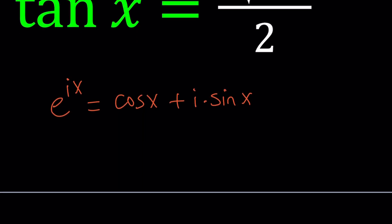Now, in this expression, if you replace x with negative x, you get e to the power negative ix, and since cosine is an even function, cosine of negative x is going to be the same as cosine of x, but sine is odd, so sine of negative x is going to be negative sine of x. So that's why we're going to get a negative sine here.